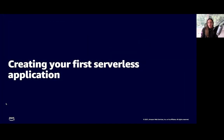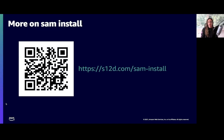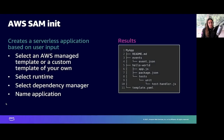Now we're going to go through the steps to create a serverless application using SAM templates. The first thing you need to do is install SAM — you can do that with the link shown here, or go to s12d.com/SAM-install. If you're using Cloud9, you don't need to install SAM, it's already installed for you. Once you have SAM installed, the first command you need is to run SAM init. When you do that, you need to fill out a few things. First, choose what kind of template you want — we give you some templates to start from, like a simple Hello World application or a web backend.